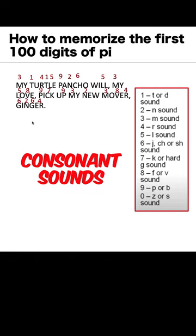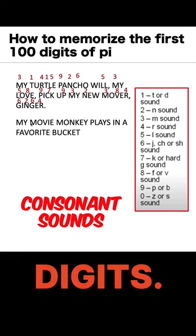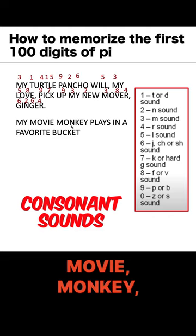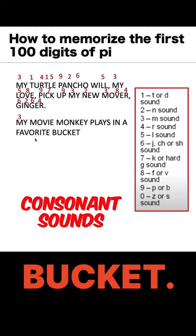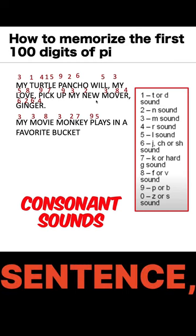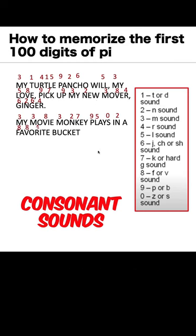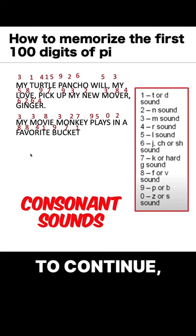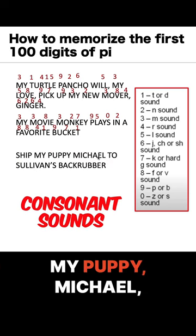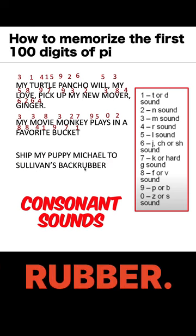Now, let's continue with the next succeeding digits. Here is again the sentence: 'My movie, Monkey, plays in a favorite bucket.' And so, the same as what we did in the first sentence, we are going to translate sounds into numbers. Then, to continue, here is again another sentence: 'Ship my puppy, Michael, to Sullivan's back rubber.'